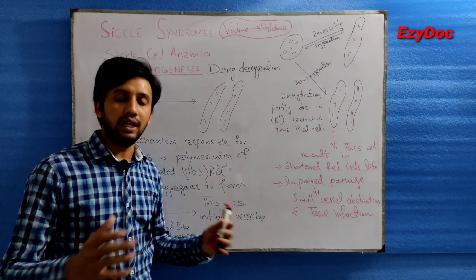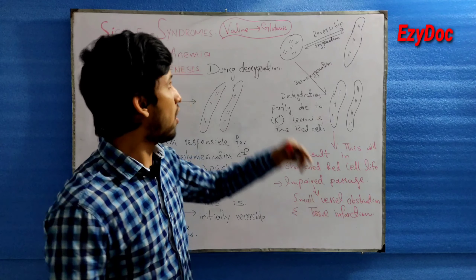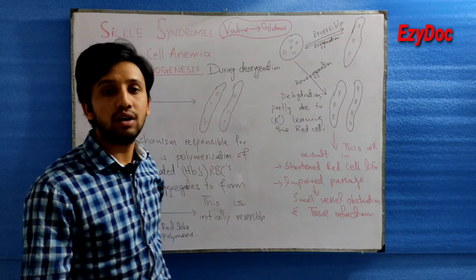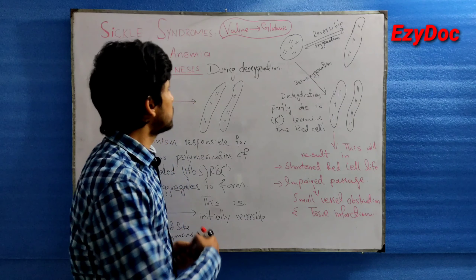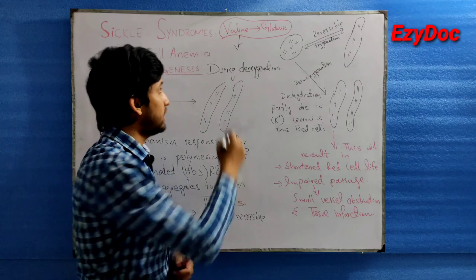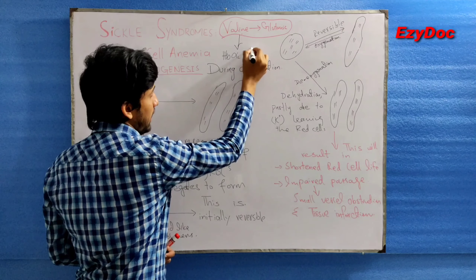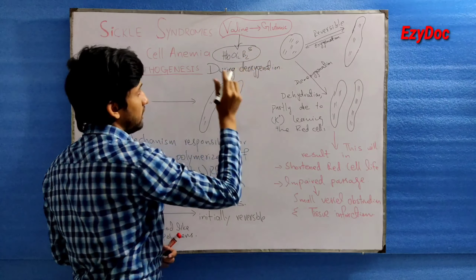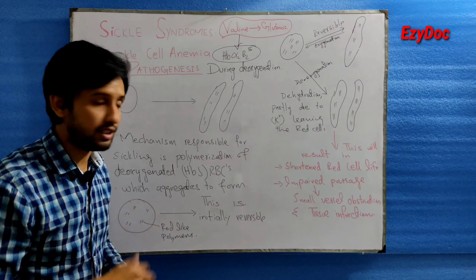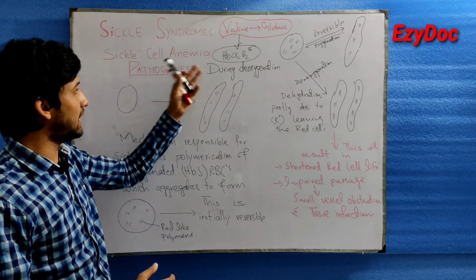In sickle cell anemia the basic gene defect is a single gene mutation — specifically the substitution of the amino acid valine for glutamic acid at the sixth position of the codon. This results in the production of the abnormal hemoglobin HbS (alpha-2 beta-2 S). This is the fundamental gene defect in sickle cell anemia or HbS disease.